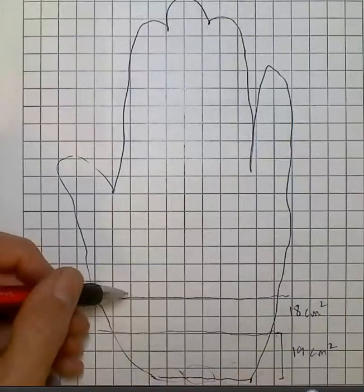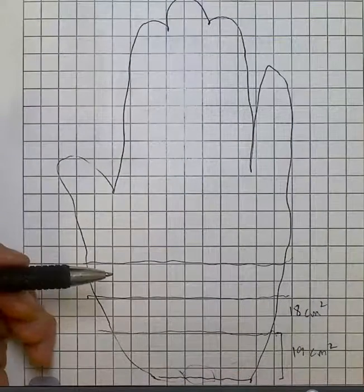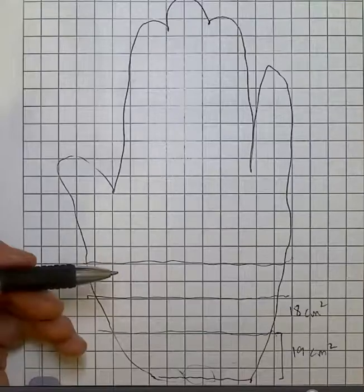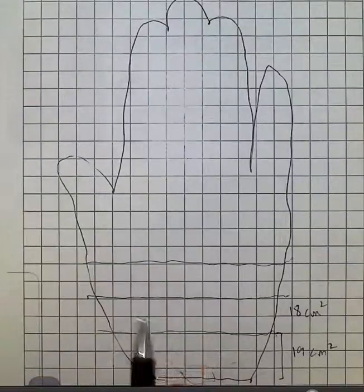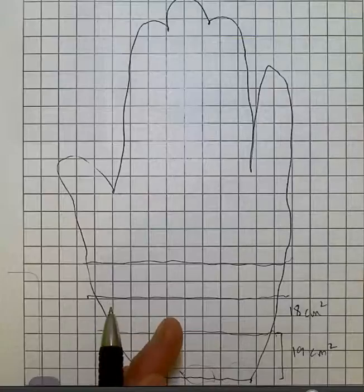And so on up your hand until you get an approximate measurement of the area of your hand. Now obviously repeat the same for your foot and please return this attached to the other assessment tasks.